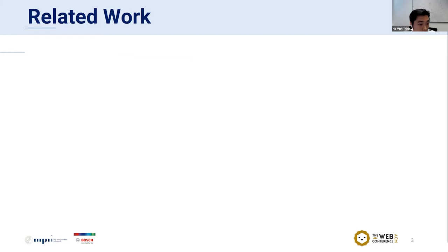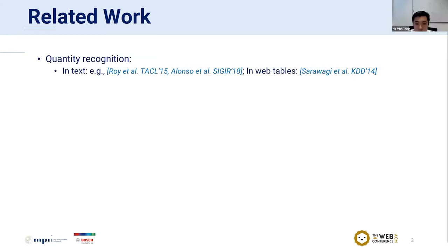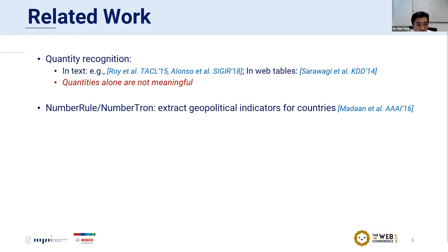For the related work about quantities, the first line of work is on quantity recognition. There are already several works on extracting quantities from text and web tables, representing them as values and units. However, detecting quantities alone is not enough to make them meaningful because we also need to know what the quantities are about. This has been addressed in early works, Number Rule and Number Tron, which extract geopolitical indicators for countries such as GDP or inflation rate. However, this work is very limited because they only target geopolitical indicator relations, do not work on large scales, and their precision is quite low.